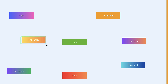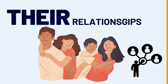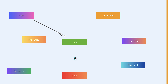Then we have the category of the post, and profanity — meaning we are going to create some words that are profane, so if you create a post we are going to check if your post contains any profane words that we have defined. Alternatively, we can use AI to detect profanity in your post, but let's keep it simple by creating our own profanity words. Now let's look at the relationships between these models.